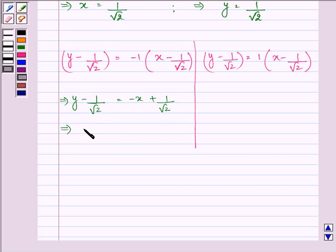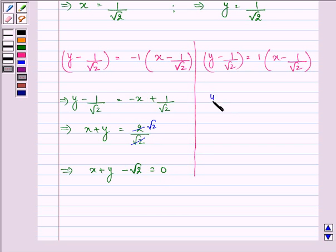This implies x plus y minus 1 by root 2 minus 1 by root 2 gives us 2 by root 2 which gives us x plus y minus root 2 is equal to 0. In the same manner we will be simplifying for equation of normal. We have y minus 1 by root 2 is equal to x minus 1 by root 2. Simplifying, we have x is equal to y.